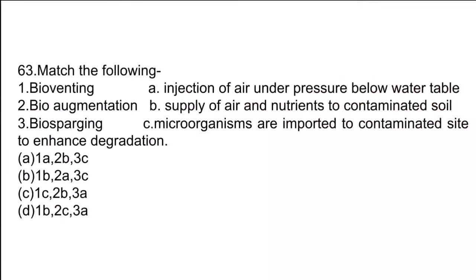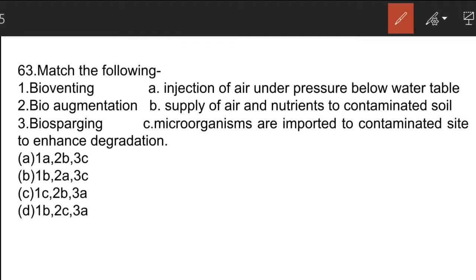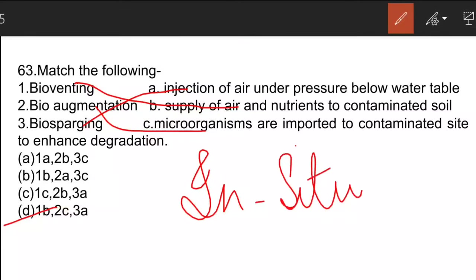The next matching question: Bioventing is the supply of air and nutrients to contaminated soil. Bio-sparging is the injection of air under pressure below the water table. Bio-augmentation is when microorganisms are imported to a contaminated site to enhance degradation. Option D is the correct answer. These — bioventing, bio-augmentation, and bio-sparging — are all in-situ methods of remediation.